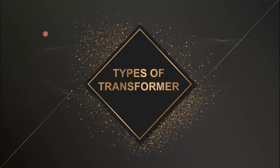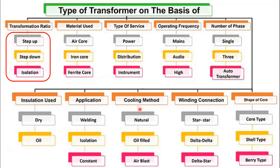Hello viewers, welcome to another video. In this video we will see the different types of transformers used in the electrical power systems, mainly in generation, transmission, distribution and utilization of electrical power systems. Also these types of transformers are used in small electronic devices. The factors on which different types of transformers are based upon — we will see all those factors and cover all types of transformers.